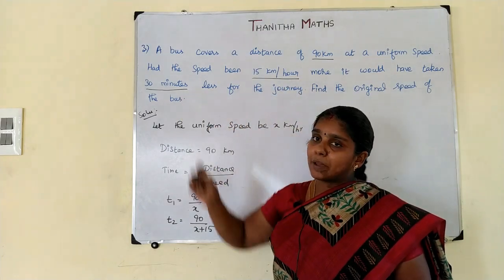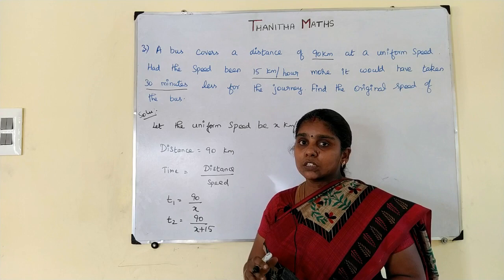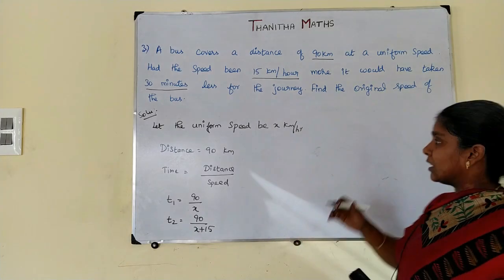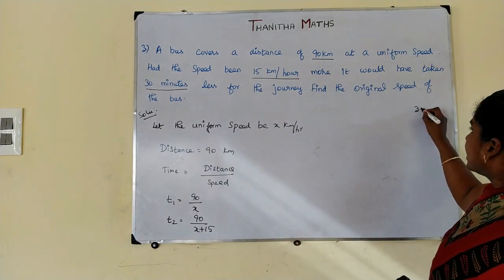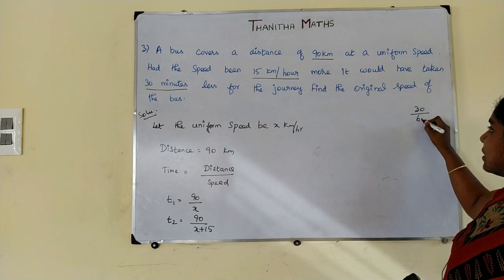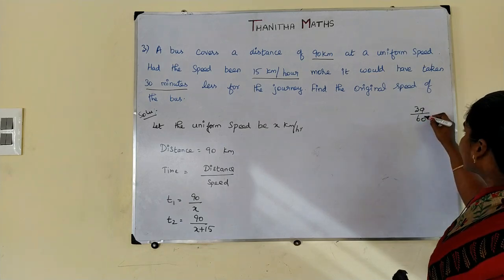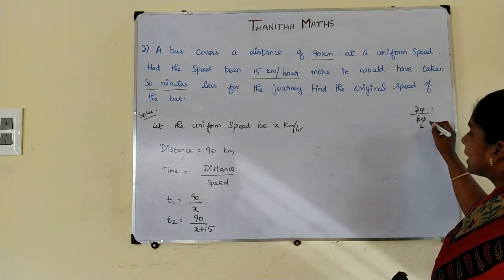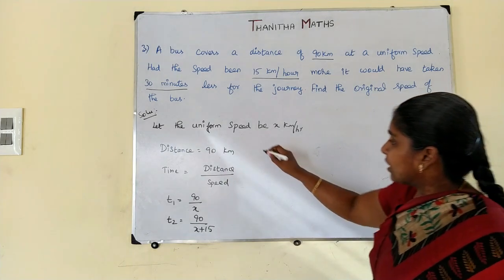The time difference is 30 minutes. We convert 30 minutes to hours: 30 divided by 60, which gives us one by two — so half an hour.